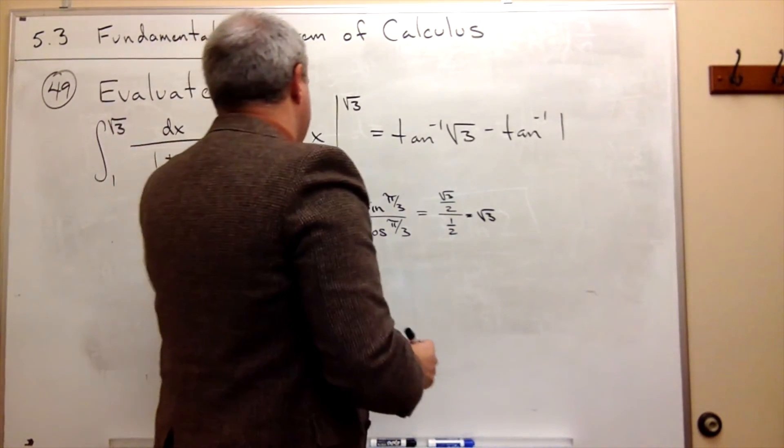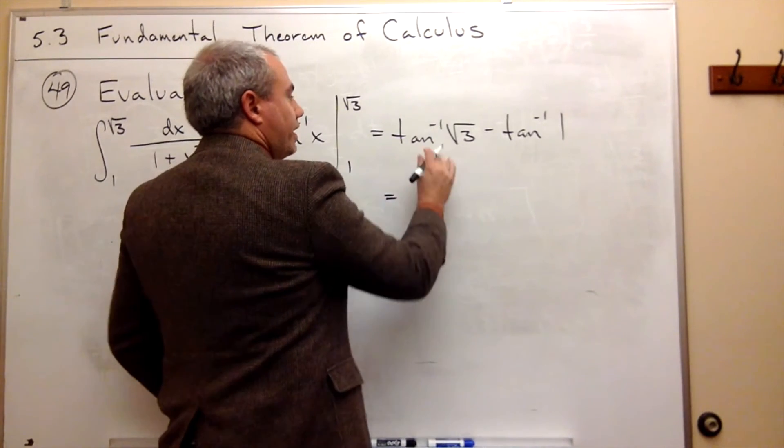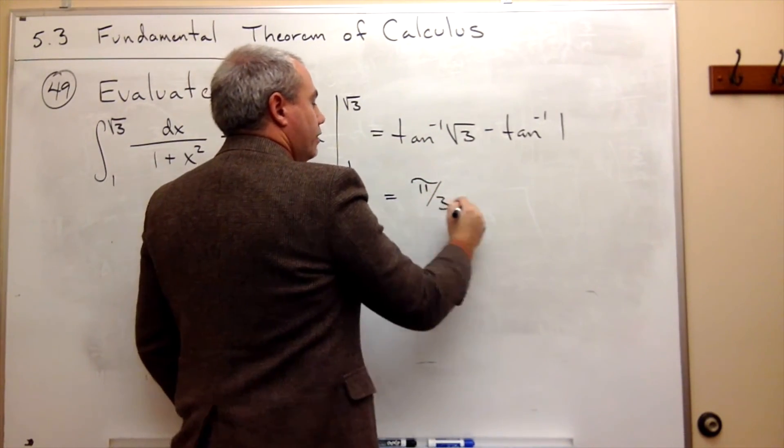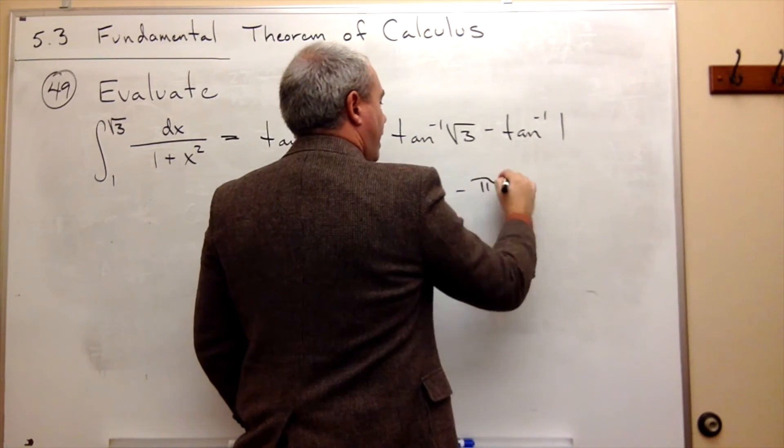So now we're ready to write this in. And we get that tan inverse of root 3 is pi over 3 minus tan inverse of 1 is pi over 4.